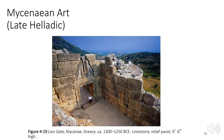The Lion Gate is the outer gateway of the stronghold at Mycenae. It creates a pinch point through which enemies would have to pass. This was erected a few generations before the presumed date of the Trojan War.